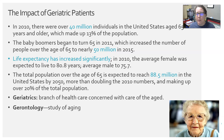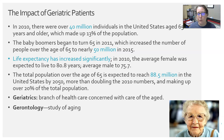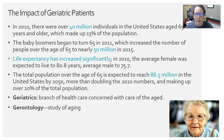In 2010, there were over 40 million individuals in the U.S. that are age 65 years and older, which made up about 13 percent of the population. The baby boomers began to turn 65 in 2011, increasing the number of people over age 65 to nearly 50 million — a 10 million jump in just five years, starting in 2015.